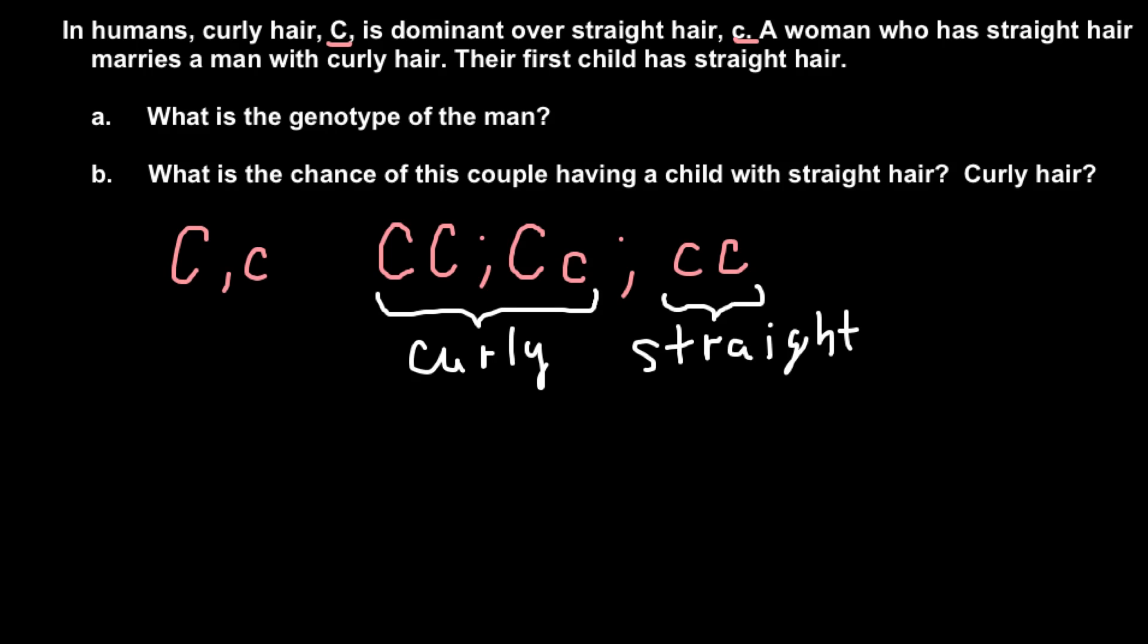So now we can solve this problem. We're told that the male has curly hair and the female has straight hair. And as you see, we know the genotype of the female because only one genotype can produce this phenotype. So we know that the female would be small c, small c genotype. But the male can belong to these two genotypes, so let's consider each genotype.